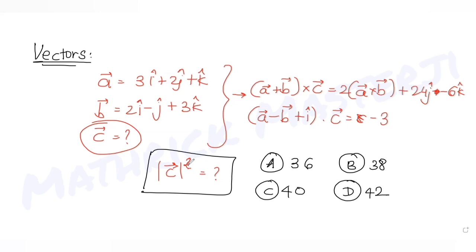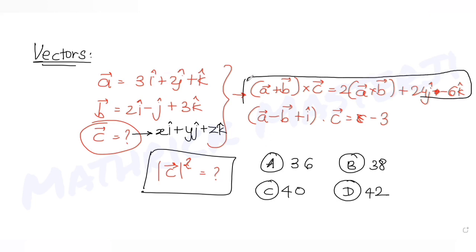To solve for vector c, let's assume it has the form xi + yj + zk, where x, y, and z are the unknown coefficients of i, j, and k respectively.